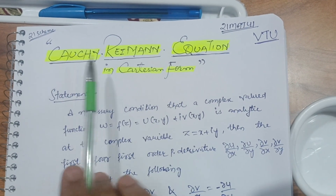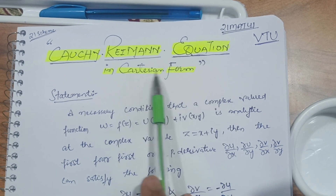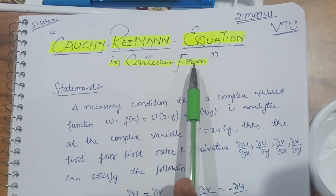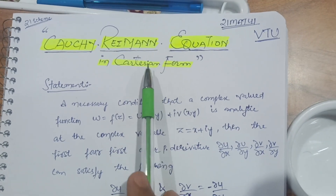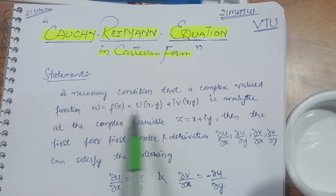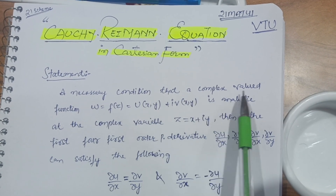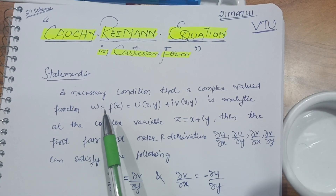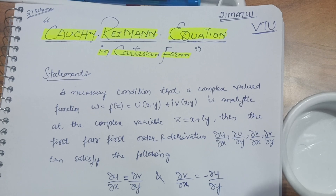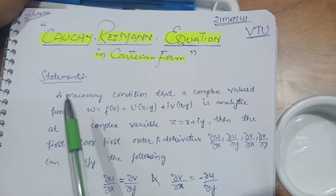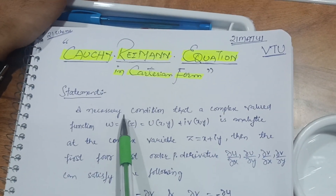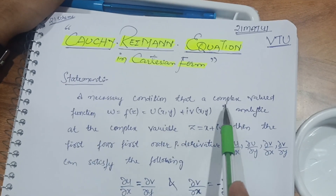In this video, let's start without wasting time. I have chosen the most important question: the Cauchy-Riemann equation in Cartesian form. There are two forms — one is the polar form and another is the Cartesian form. This question is asked in almost every examination. First of all, look at the statement of this particular equation — it gives a necessary condition that a complex-valued function must satisfy.